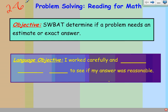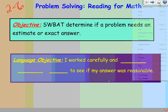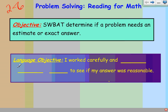Here we go. Objective is students will be able to determine if a problem needs an estimate or an exact answer. You might have had this last year. This was what used to be a California standard. Apparently it's still something that we need to do for Common Core. So we're going to find out whether a problem needs an estimate or an exact answer. We also have the language objective. The language objective basically says that I work carefully and blank blank blank to see if my answer was reasonable. And we'll take a look at that a little bit later.